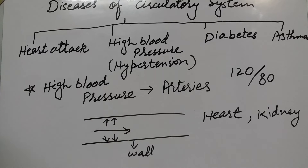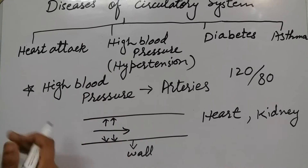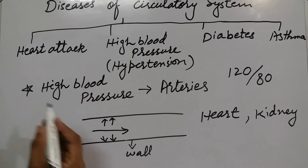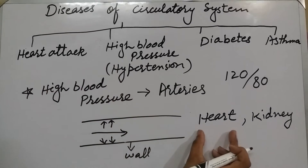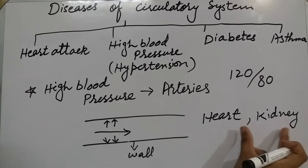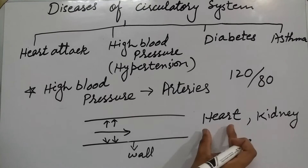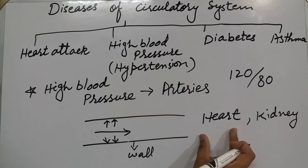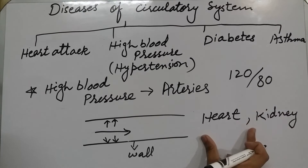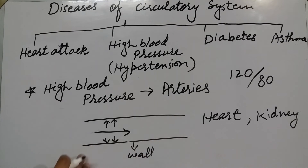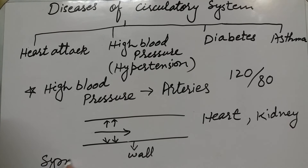اب ہمیں کیسے پتا چلے گا کہ ہمیں hypertension ہے؟ اس کی کچھ symptoms ہیں۔ High blood pressure کی وجہ سے body میں سب سے زیادہ effect ہونے والے organs heart اور kidney ہیں، جب ان کو blood بہت زیادہ pressure سے supply ہوتا ہے۔